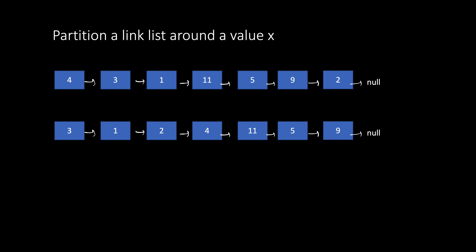The problem statement is that we have to partition a linked list around a value x. We have been given a head of the linked list with some values, and we have to arrange the linked list such that all values less than x fall in the front and all values greater than or equal to x fall at the back.